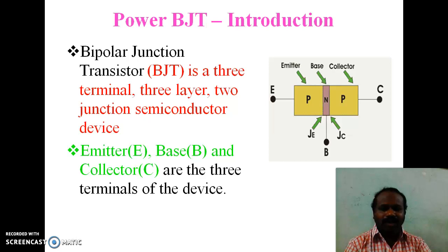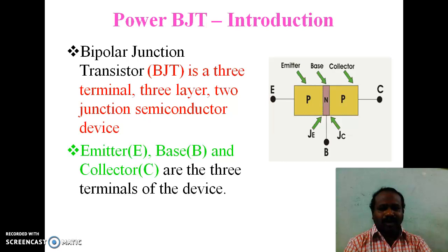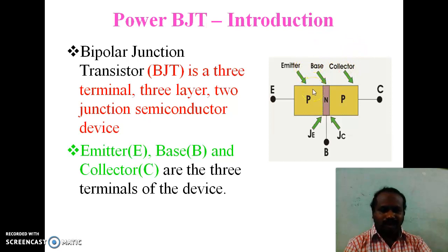BJT is a three-layer, three-terminal, two-junction semiconductor device. If it is a PNP transistor, then the three layers are PNP. If it is an NPN transistor, then the three layers are NPN. Irrespective of the structure, whether it is PNP or NPN, the three terminals are the same — that is Emitter, Base, and Collector. It has two junctions, namely Input Junction and Output Junction. Input Junction is represented as JE Junction, that is Emitter-Base Junction, and another one is Collector-Base Junction, also known as Output Junction.